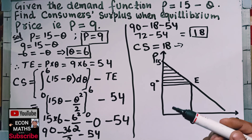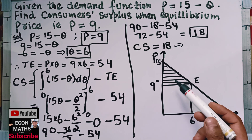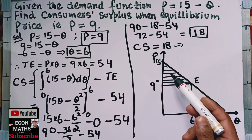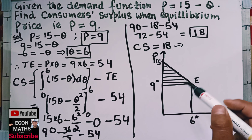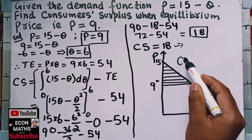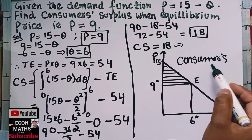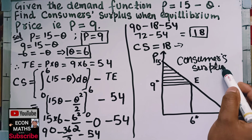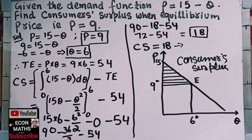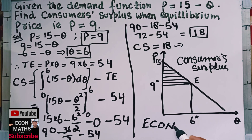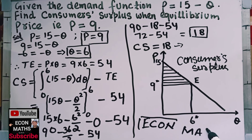The consumer surplus is that portion which is above the equilibrium price and below the demand curve, so this shaded portion depicts the consumer surplus. Hope you enjoy the video. Please subscribe to the channel — that is Economics — where I will cover all the mathematical economics stuff for you. Thank you, have a lot.